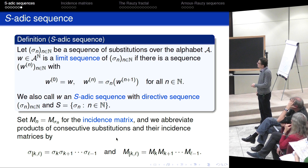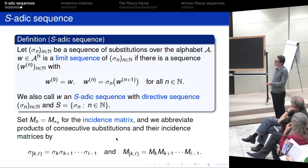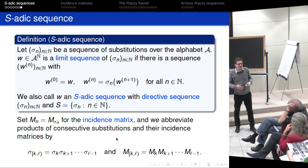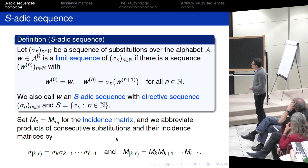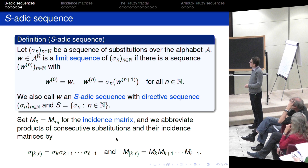We have to form iterations of substitutions. For a block of substitutions, this is sigma_{L-1} applied to sigma_L and so on, finally applying sigma_K, abbreviated sigma from K to L. The incidence matrix is the abelianization of the substitution — it forgets the order of letters and acts from Z^d to Z^d. Products of incidence matrices are abbreviated similarly.